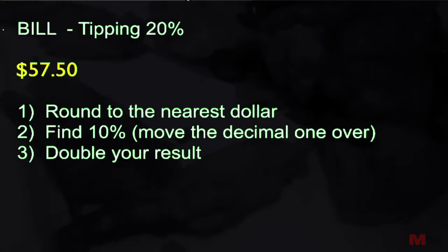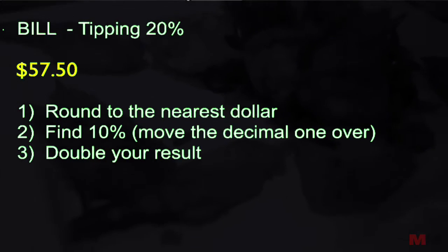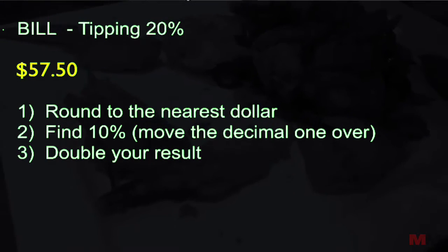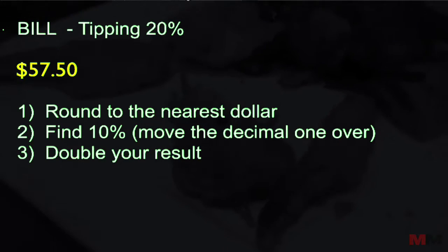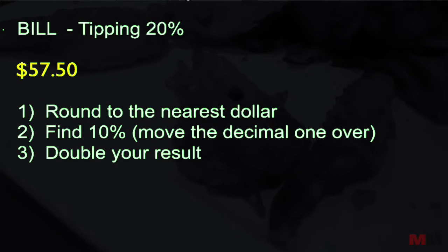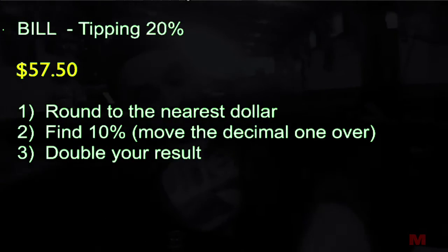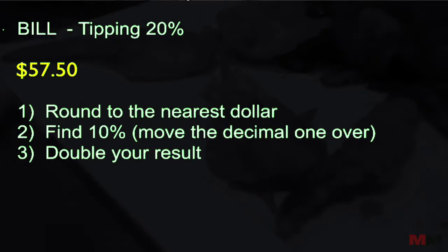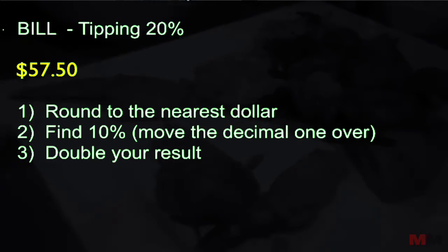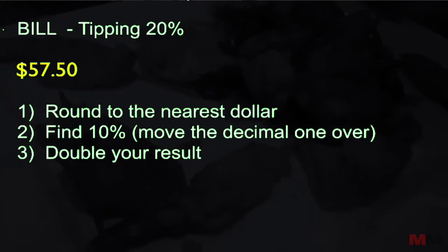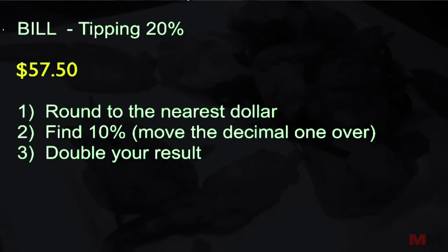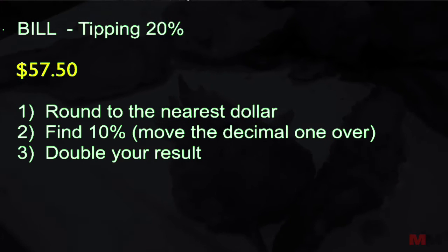The point of this exercise is to be able to do this in your head, so you don't need to ask your friend or use your phone to calculate tip. To tip 20%, which is my usual norm, I would do these three steps. Let's say our bill is $57.50.